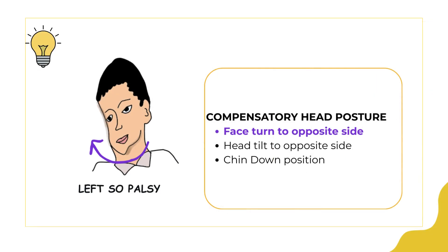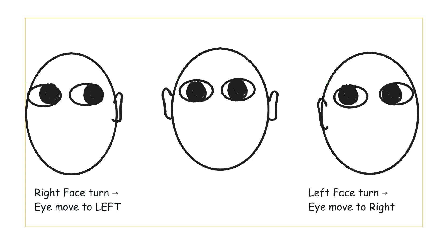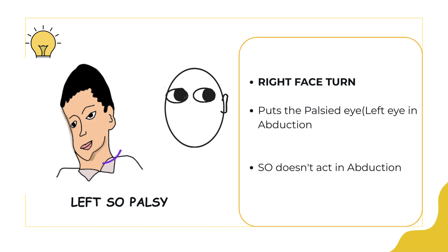The next component of the abnormal head posture is the face turn, which is again towards the normal side. When the face is turned to one side, the eyes move in the opposite direction — face turned right, eyes move left; face turned left, eyes move right. When the patient turns the face towards the normal side, the affected eye moves into abduction. Since the superior oblique is most effective in adduction, placing the eye in abduction avoids the position where the superior oblique is maximally required, thus preventing adduction of the affected eye.